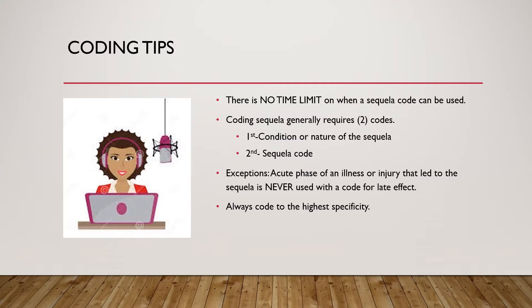Our coding tips for this segment: Number one, there is no time limit on when a sequela code can be used. It doesn't matter if the injury or sequela occurred at birth, when the patient is 25, or when the patient is 50 — whenever the sequela code is assigned, it can be used at any time. There is no time frame in which that code will run out or expire. Also, coding sequela generally requires two codes: your first should be listed as the condition or nature of the sequela, and your second diagnosis is the actual sequela code.